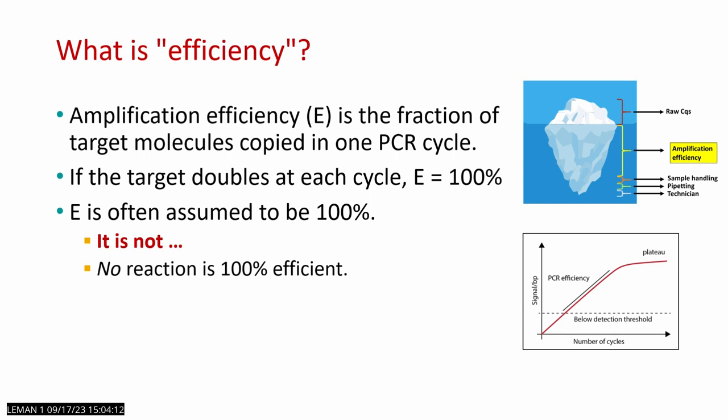Efficiency is the fraction of target molecules being copied in one PCR cycle. If all target molecules are doubling in one cycle, that's 100% efficiency. It is often assumed to be 100%, especially when we report raw EQs, but it is not. There is no reaction that is 100% efficient, especially not PCR. It could be test-specific elements such as reagents and your thermocycler, but also fundamental thermodynamic principles state that it cannot be 100%.